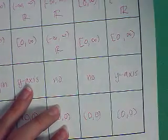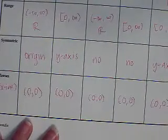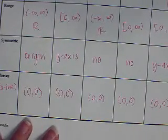And the zero is at 0, 0. Notice that on all of these, we have zeros at the origin. And that is always true of these parent functions.